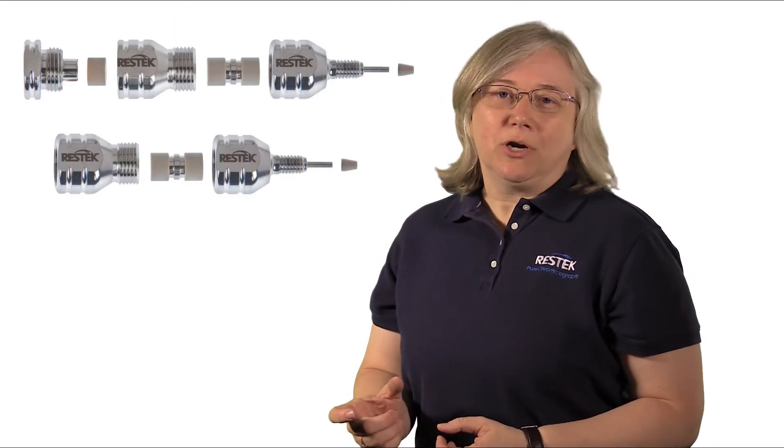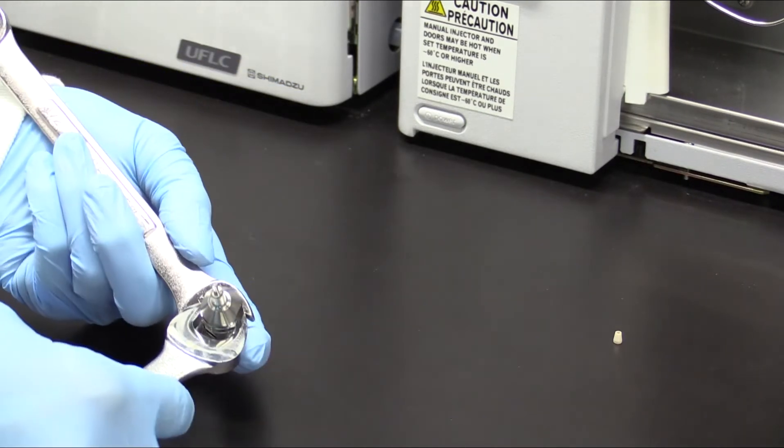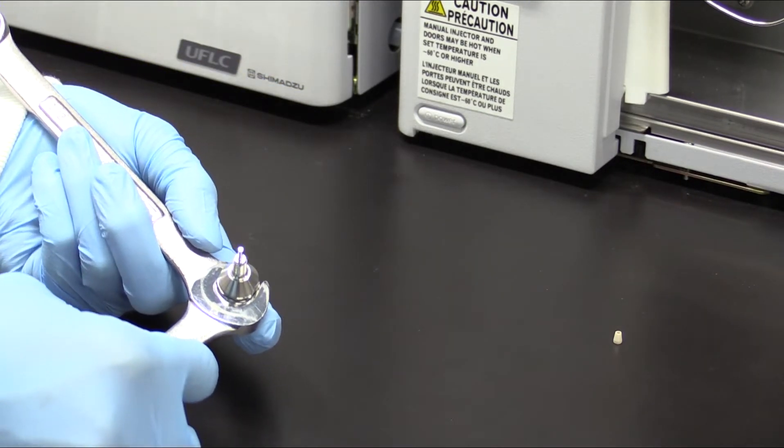When you're using a Level 2 or Level 3 system, where a guard cartridge is installed, you first disassemble the holder, drop in the cartridge, tighten by hand until it's snug, and then use a pair of wrenches to complete the tightening.